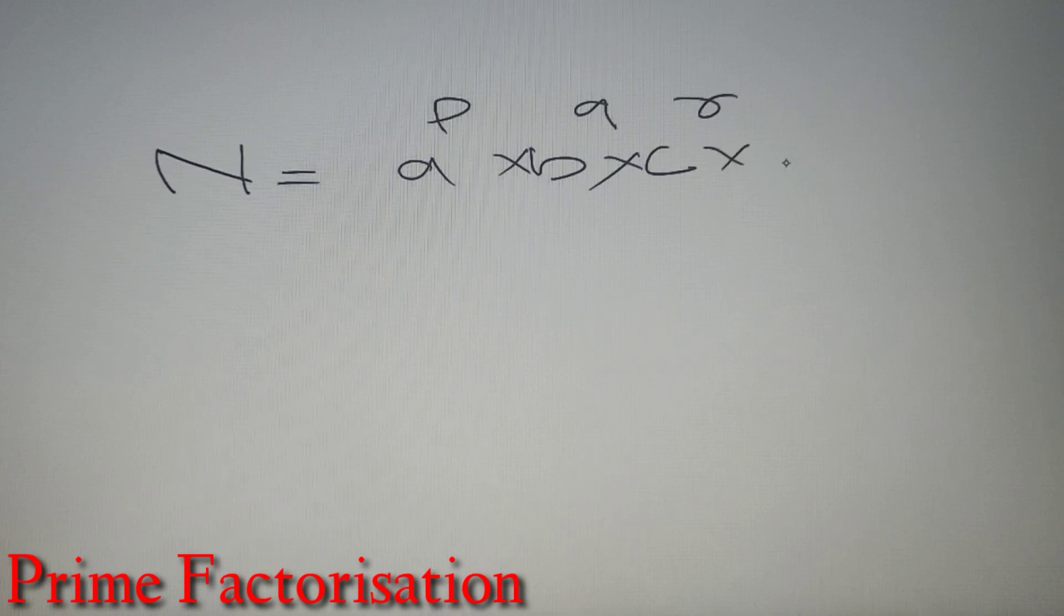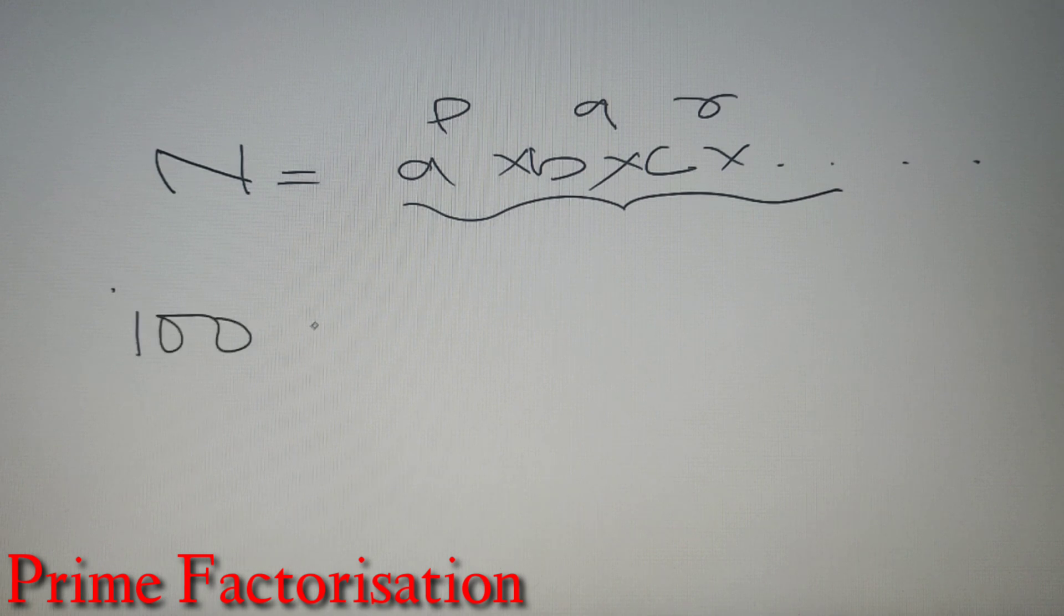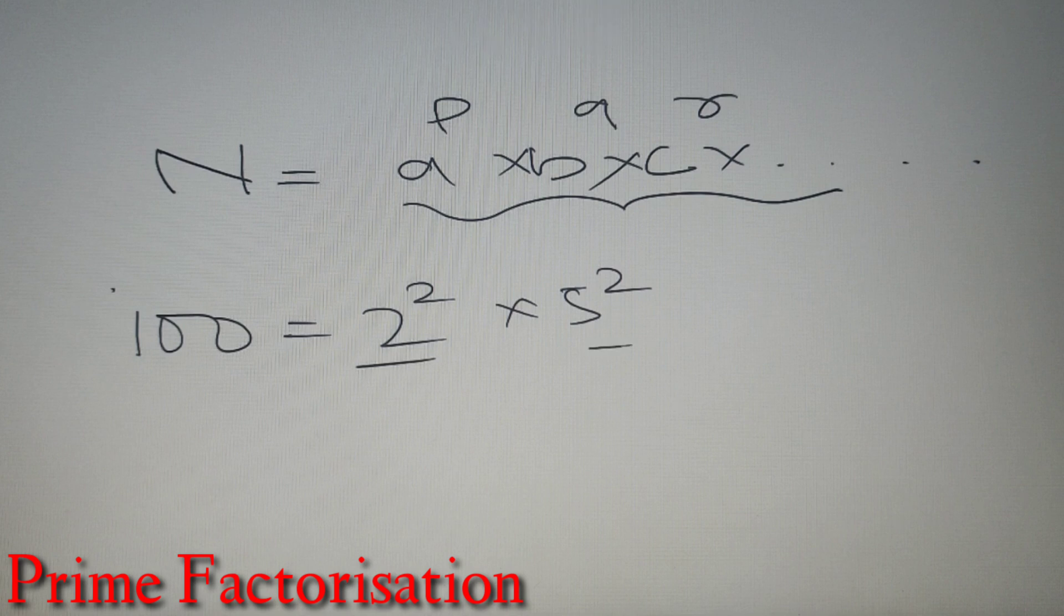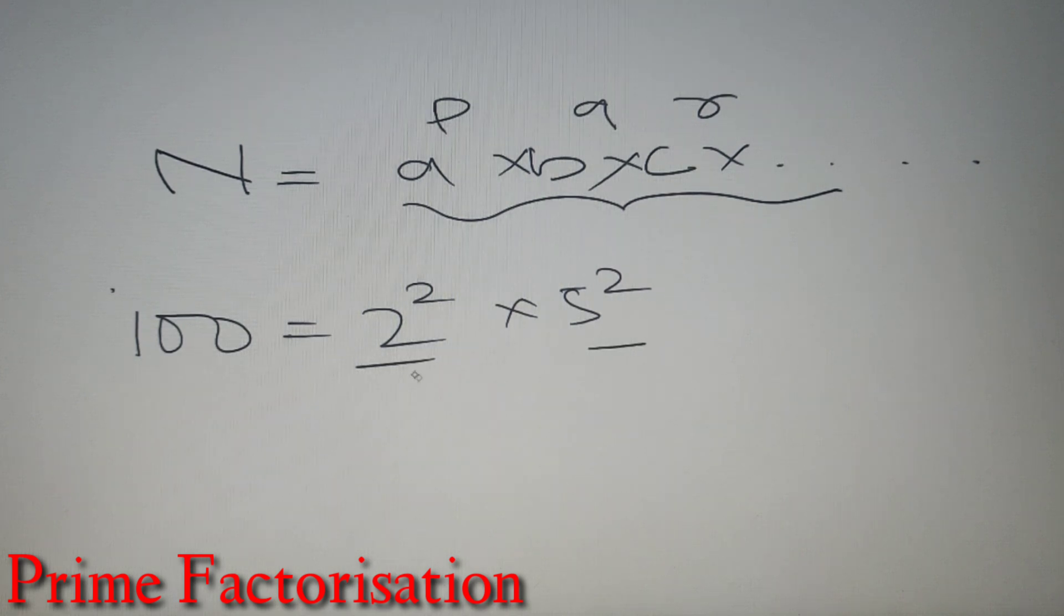Now if the number is larger then there may be other prime factors but we have taken three numbers for the sake of simplicity. So let's take an example. If we have a number 100 then 100 can be represented as 2 square into 5 square where 2 and 5 are prime numbers and 2 and 2 are the respective powers. So by this example you can see how easily we can represent a number in its prime factorized form.